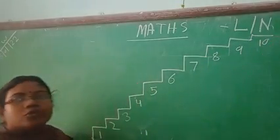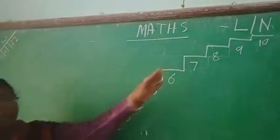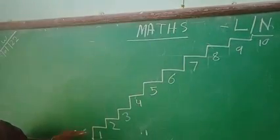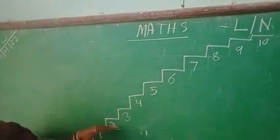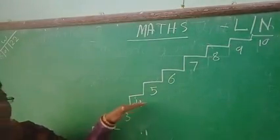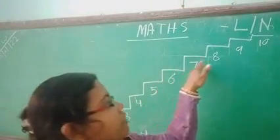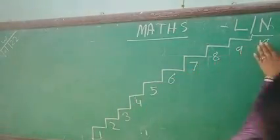Suppose I have to go up. So how we count the numbers? 1, 2, 3, 4, 5, 6, 7, 8, 9, 10.